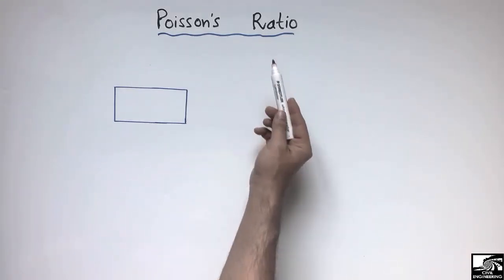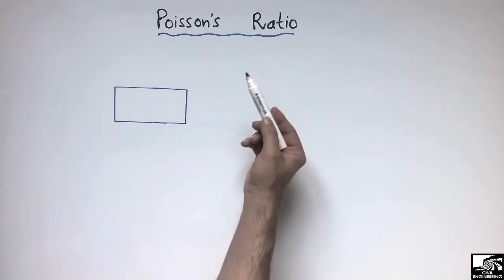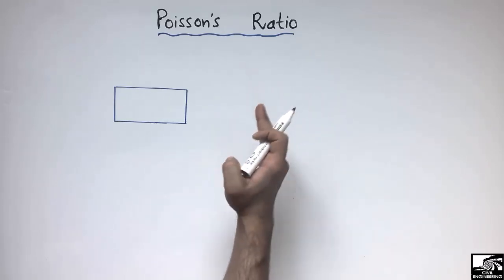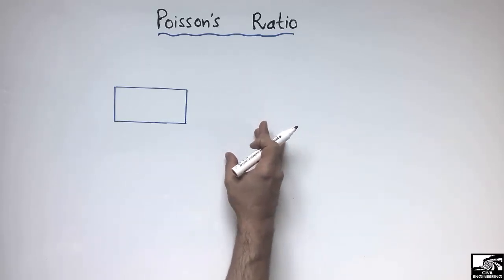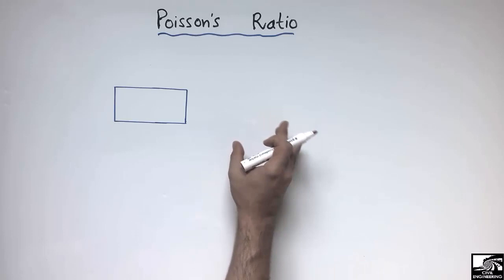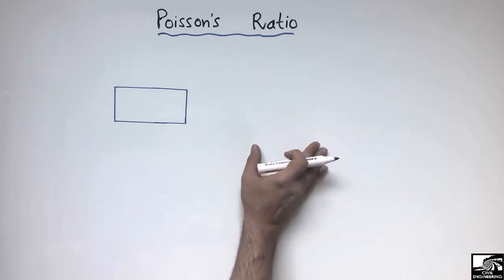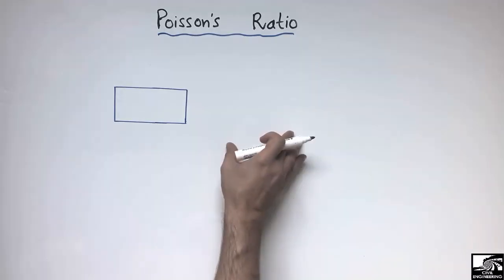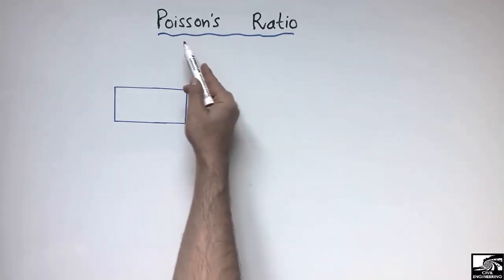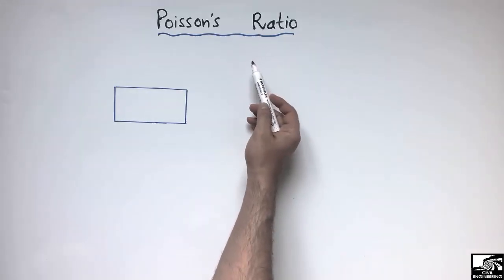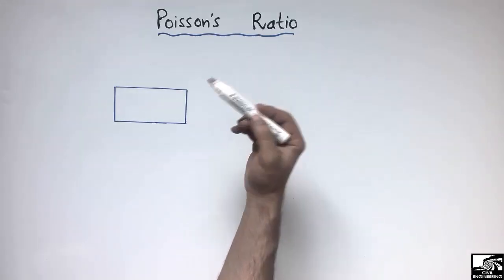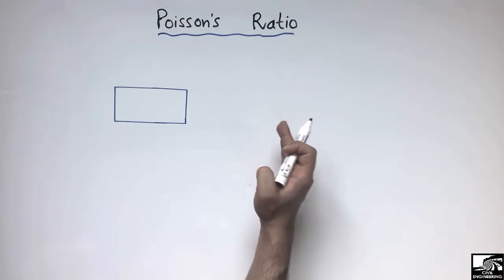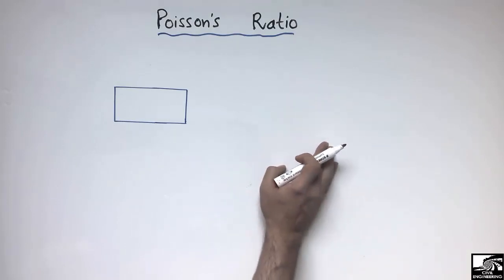Poisson ratio is basically derived from the Poisson effect, in which a material contracts in one direction while it is being expanded in the other direction. This effect is known as the Poisson effect, and the Poisson ratio is defined as the ratio which shows how much a material can contract or expand.